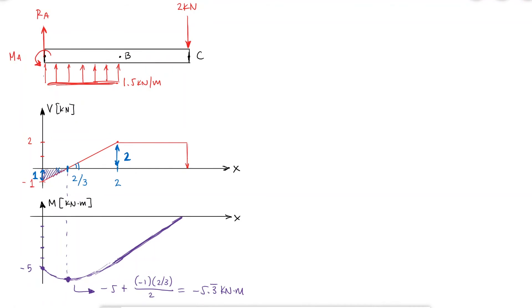Using singularity functions, I see that the distributed load function has a distributed load of 1.5, that starts at 0 and ends at 2. Integrating this function, I find the equation for shear, and the integration constants are just the external loads, r, a, and 2, which are located at 0 and 4 respectively. Since the last term is always 0, even for when x is equal to 4, I don't need to take it into account. The reaction force is minus 1, and the x minus 0 terms can be just written as x.